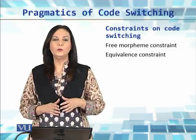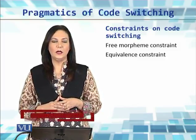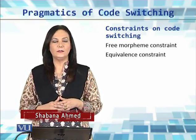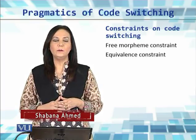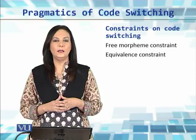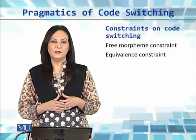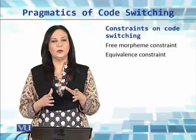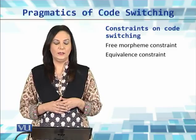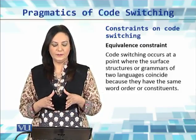The two most frequently researched rules in code switching are what we call the free morpheme constraint and the equivalence constraint. The free morpheme constraint says that switching is possible only when we have a free morpheme, which means that switching across a free morpheme and a bound morpheme is not possible.